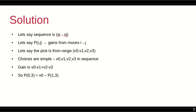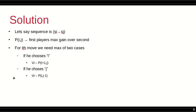Now, having understood this, let's move on to the next solution, which is where the whole solution and the recursion comes into focus. So again, let's say the sequence is Si to Sj. P(i,j) is our function that gives us the gain of the first player over the second player. And for the ith move, we need max of two cases.